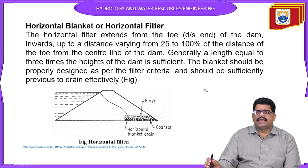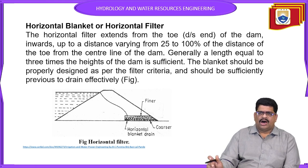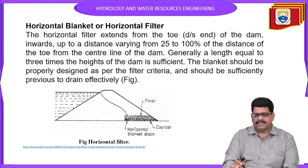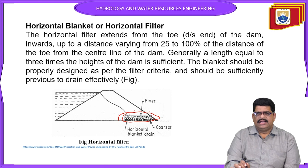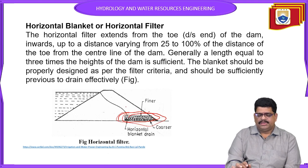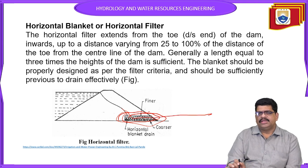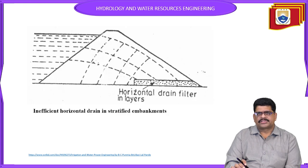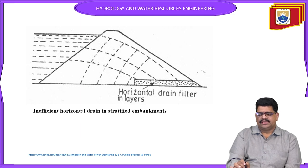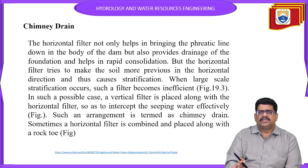Horizontal blanket filters: the horizontal filters are provided with gravel, sand, and different layers arranged horizontally. Water that is absorbed can come out through the outside through these horizontal filter layers. That is the main function of the horizontal blanket filters. Drain filters can also be provided in the same location.